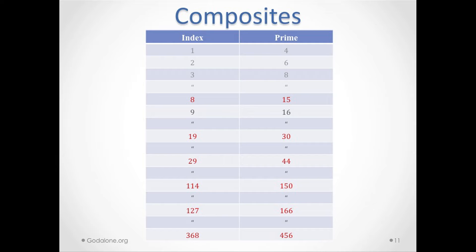So if you remove all the primes, then you see that the first composite is 4, the second one is 6, and the 127th composite is 166.